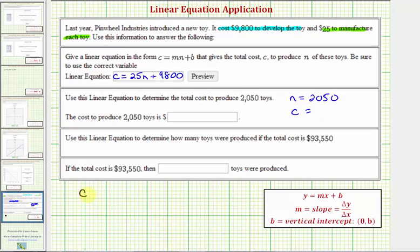So the total cost C is equal to $25 times N, which is 2,050, plus 9,800. So this is going to be equal to 51,250, plus 9,800, which is equal to 61,050. Which means the total cost to produce 2,050 toys is $61,050.